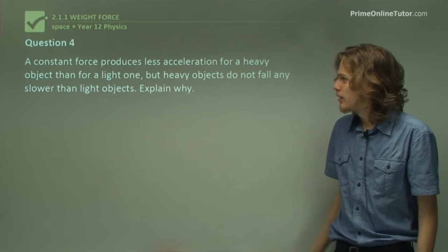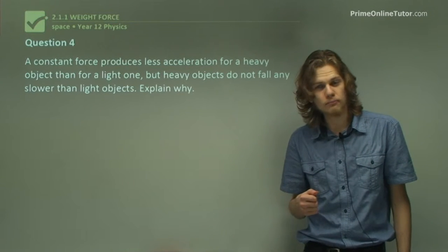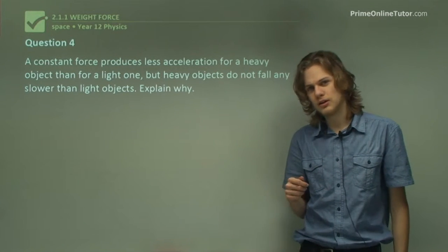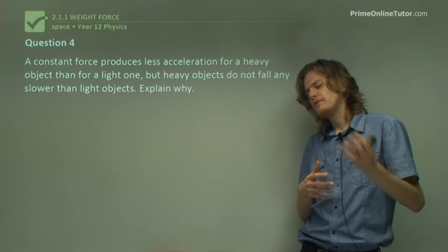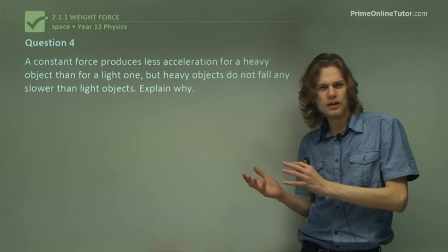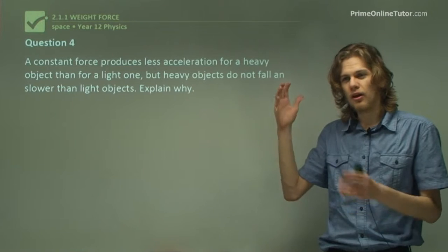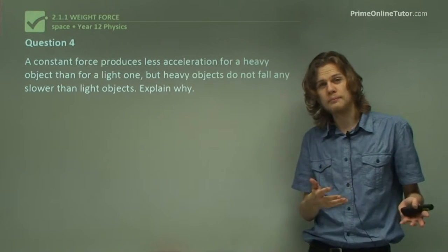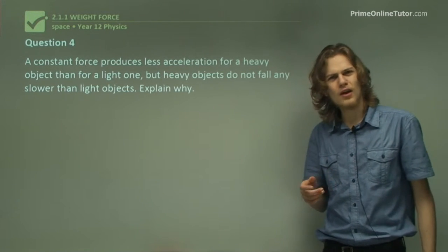Question 4. A constant force produces less acceleration for a heavy object than for a light one. But heavy objects do not fall any slower than light objects. Explain why. So the idea is, if the force of gravity is constant for all objects, that means that light objects will fall faster. Because if a constant force pushes a light object, it'll accelerate more quickly. But of course, there's an error in that way of thinking, isn't there?